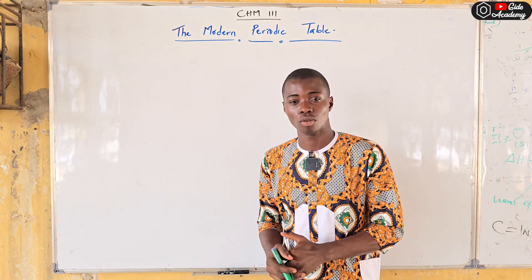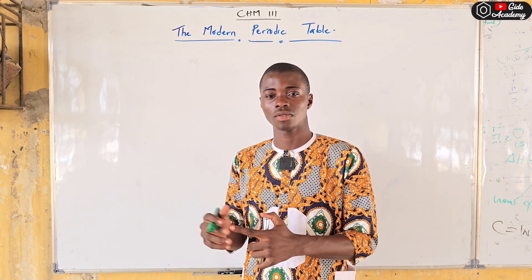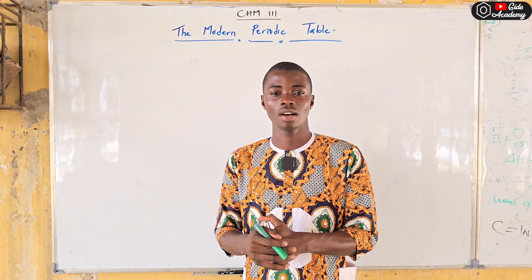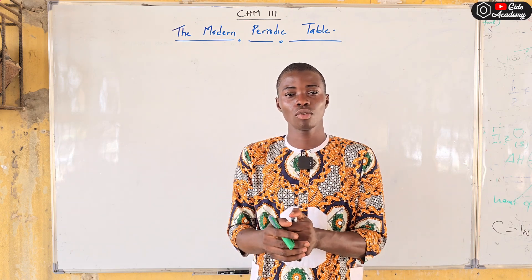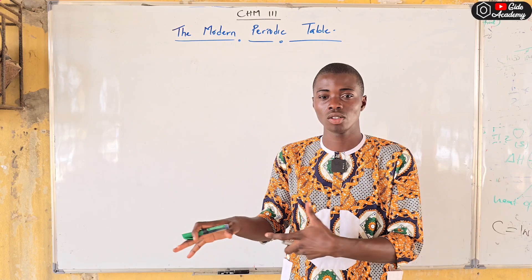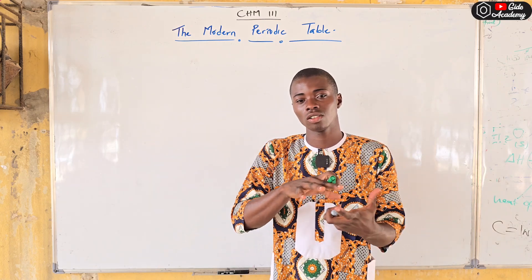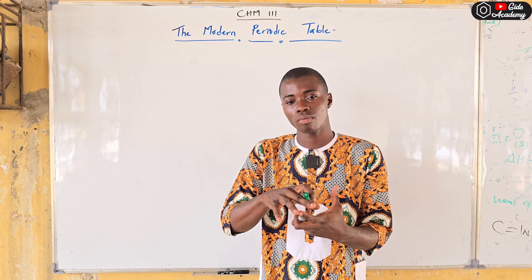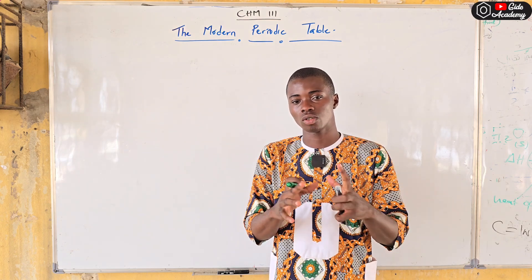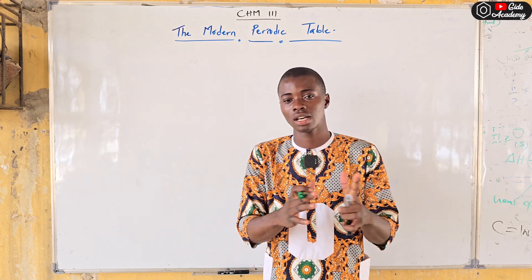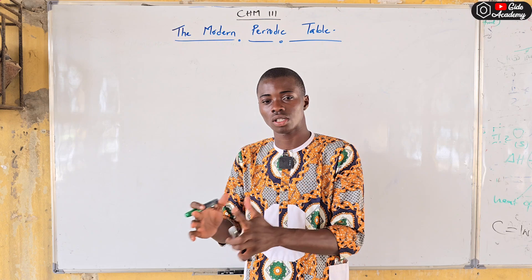Episode 2 is about the modern periodic table. After the whole classification effort by many scientists, we now have a concrete periodic table. According to Moseley, the physical properties of elements vary periodically in order of increasing atomic number. So if you look at the periodic table, from number 1 down to 118, everything is increasing: 1, 2, 3, 4, 5...